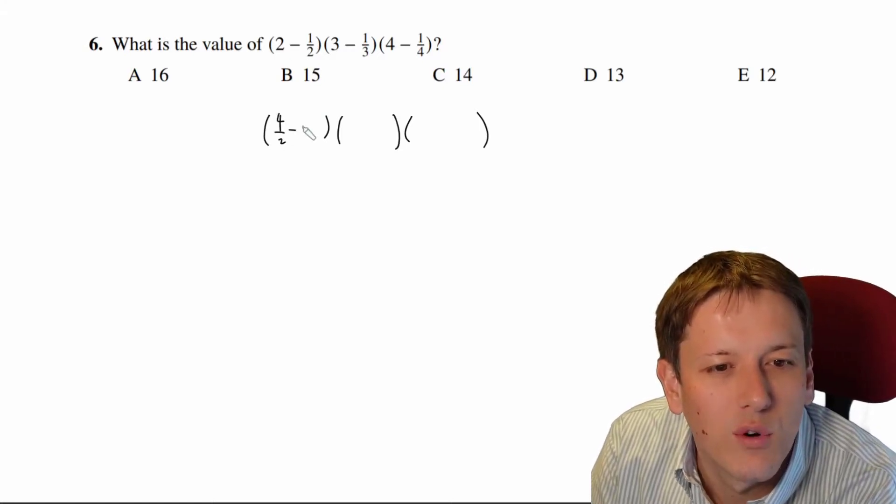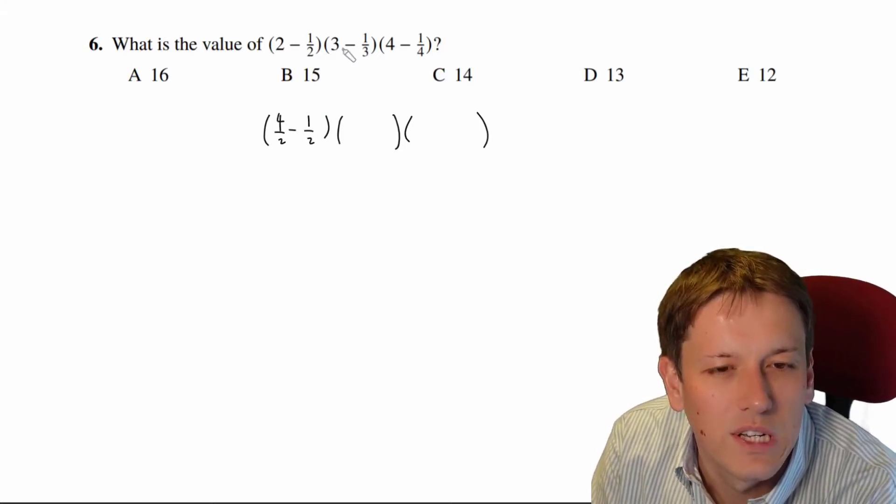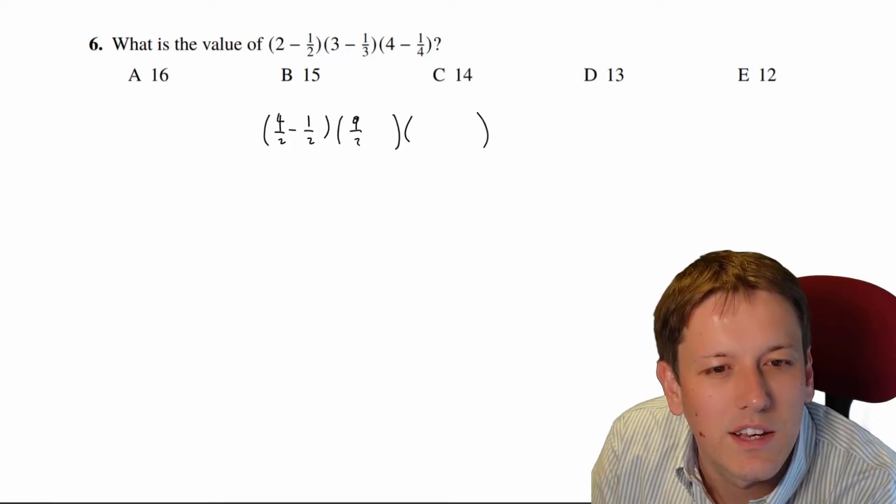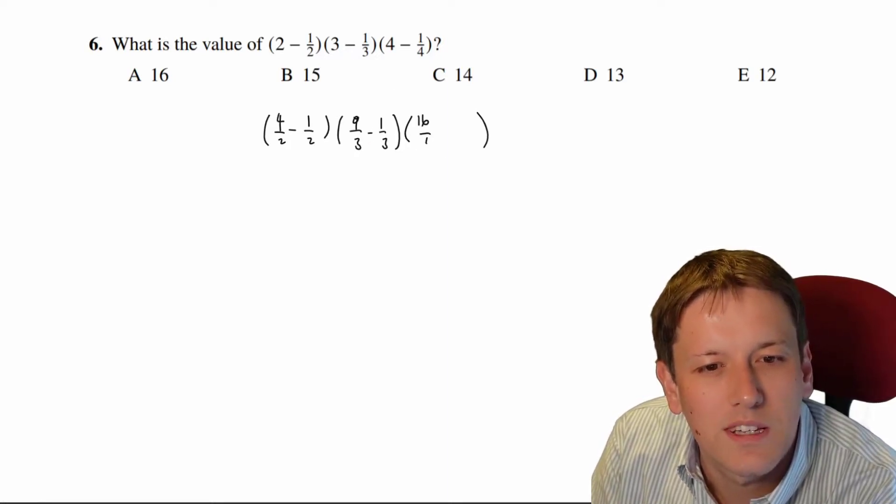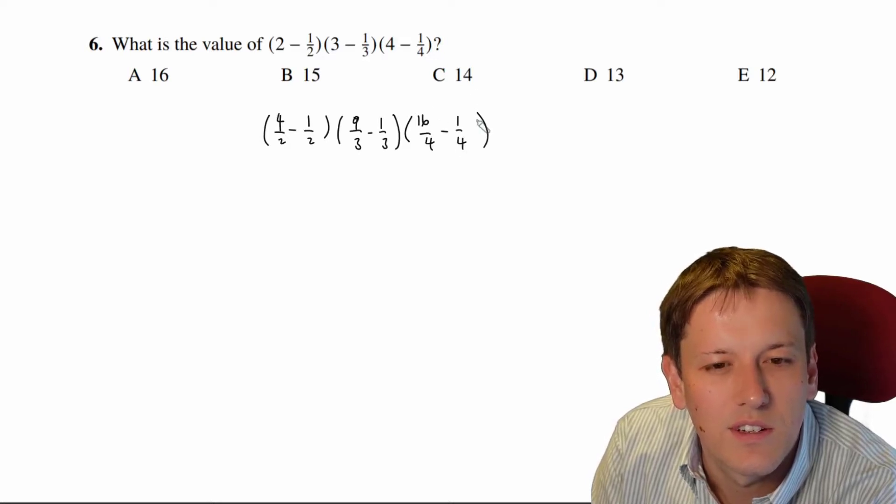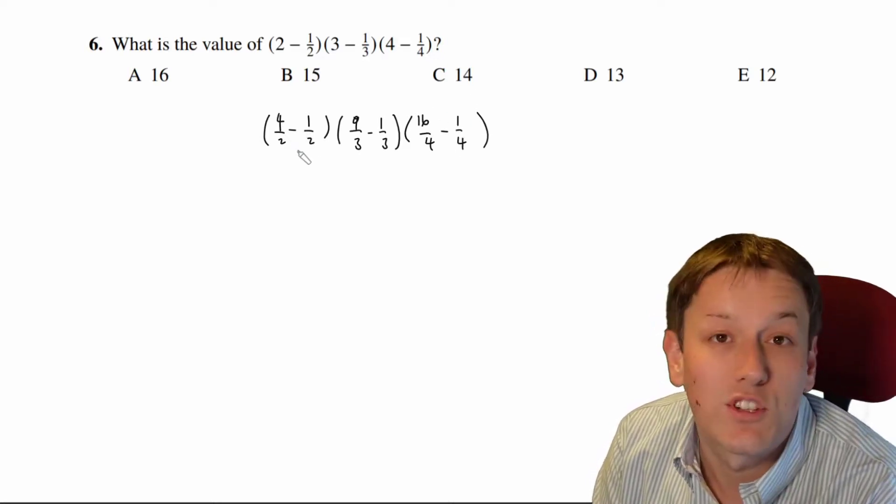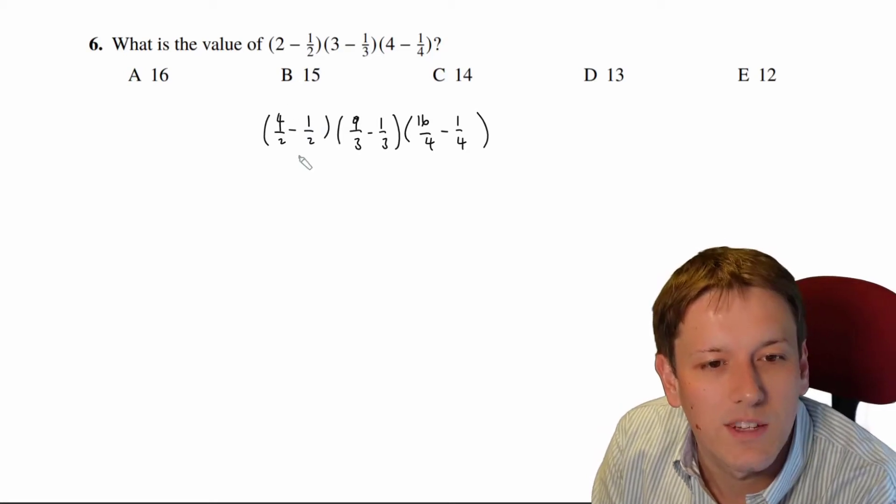2 I might think of as 4/2 then minus 1/2. 3 would be 9/3 minus 1/3, and 4 would be 16/4 minus 1/4, because I want to leave them as top-heavy fractions. This is a good way of thinking about it.